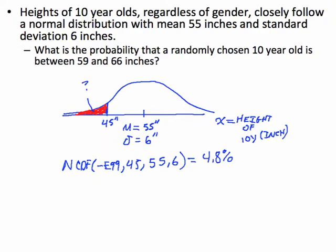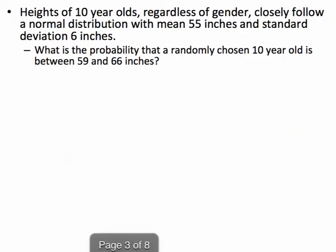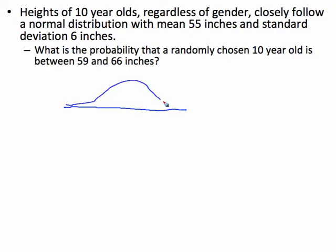Let's do another one with the same problem situation — we're still talking about 10-year-olds. This time we want to find the probability that a randomly chosen 10-year-old is between 59 and 66 inches. Again, start by drawing a picture. We know x is the height of a randomly chosen 10-year-old, the mean is 55, and the standard deviation is 6.